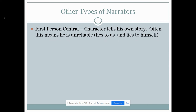Other types of narrators: first person central. This is a character that tells his own story — and often this means he is unreliable. The character in Arabi is telling his own story, but it's clear it's an adult voice; he speaks as an adult, he doesn't sound like a little child. Also, he can't remember Mangan's sister's name. There are other clues too. Because it's his memory, we have to assume that he's prejudicial or jaded in some way. We have to interpret the character based on the story that we're given.